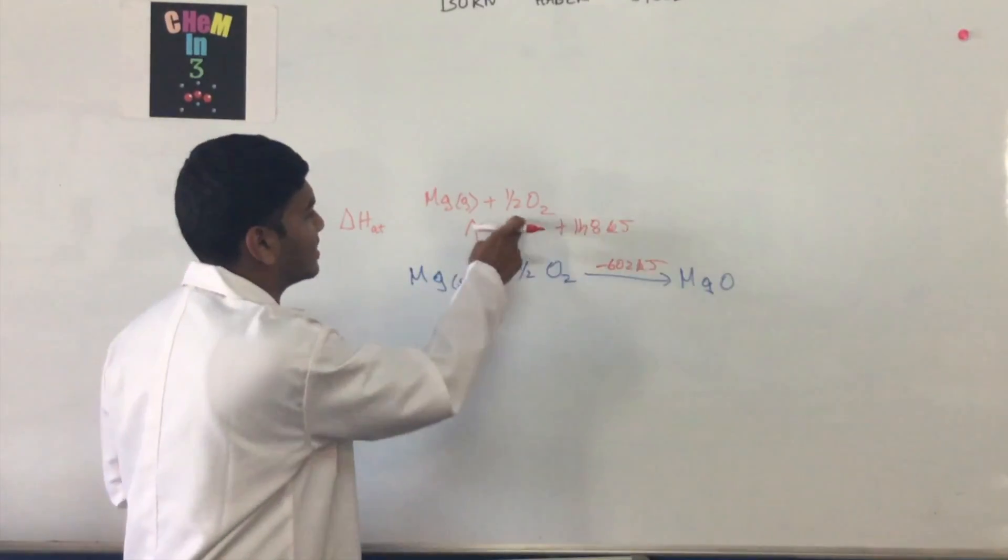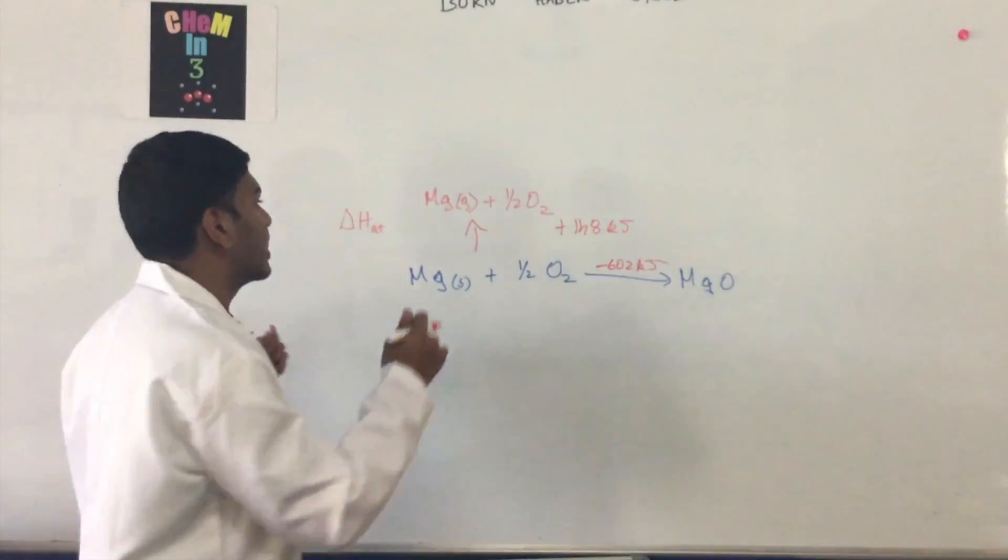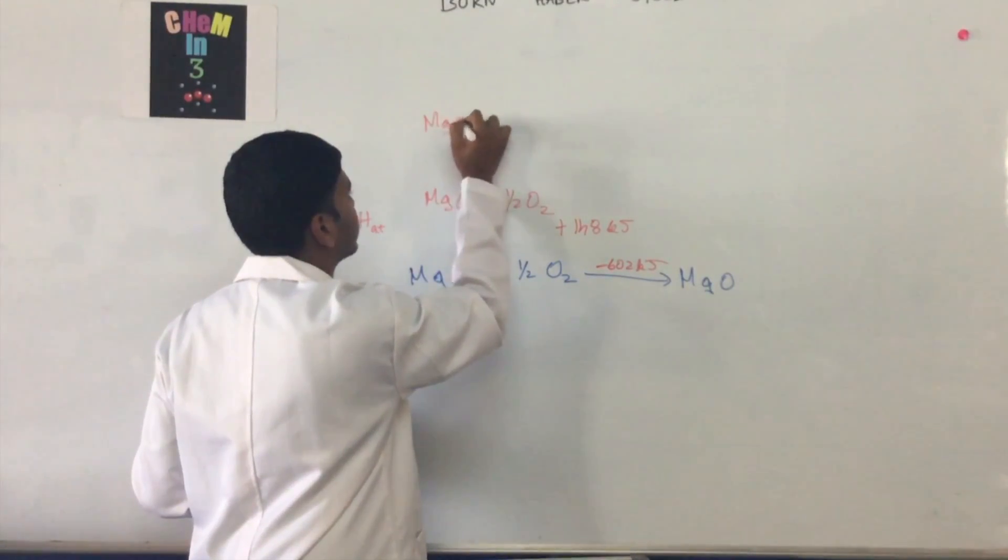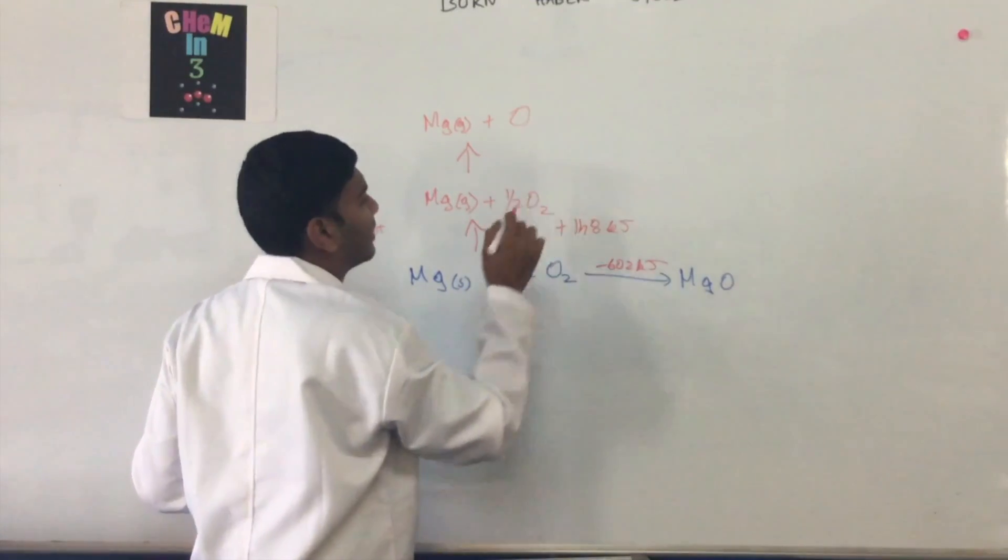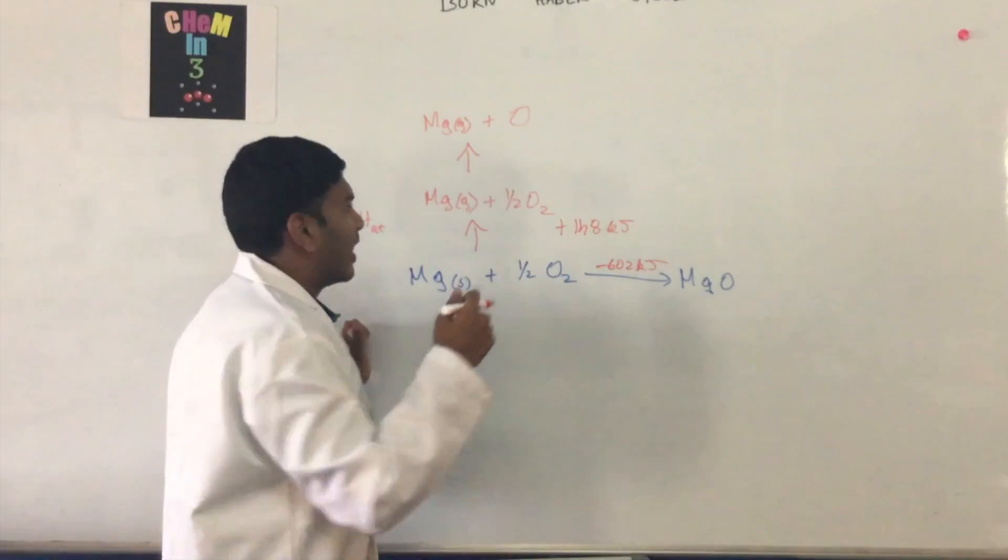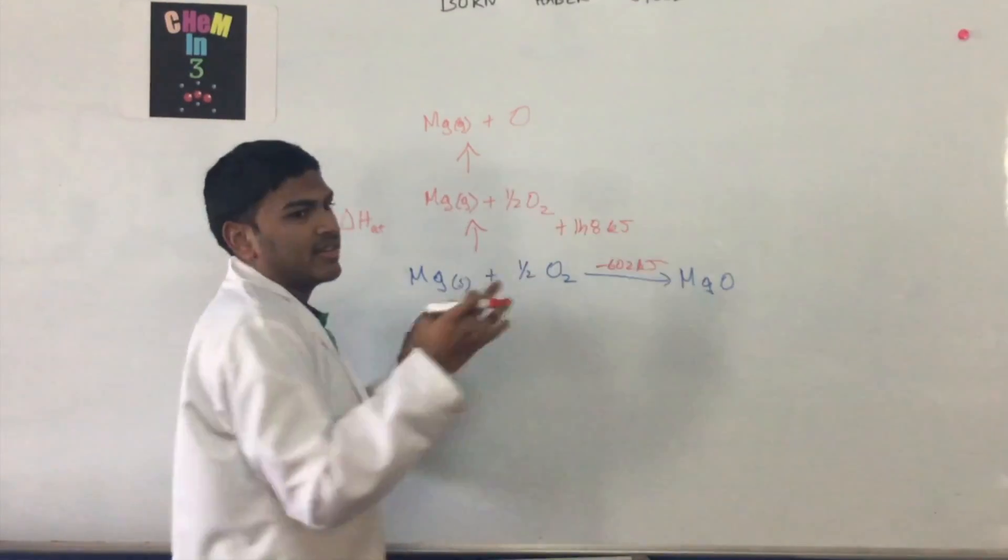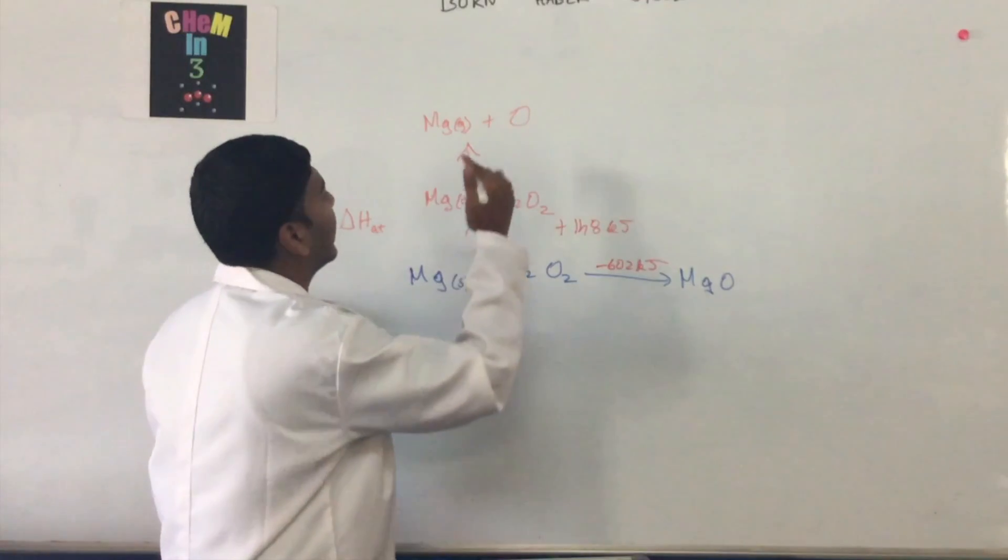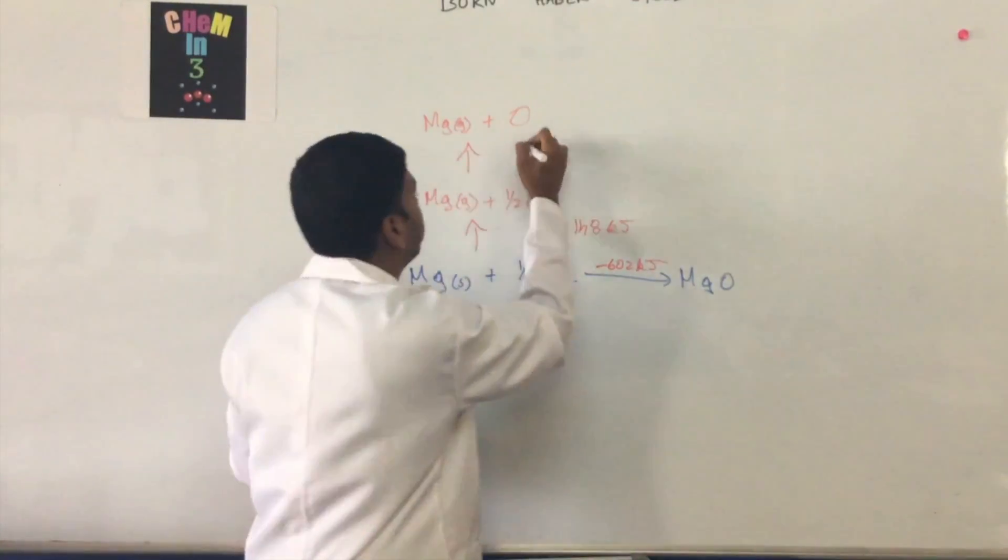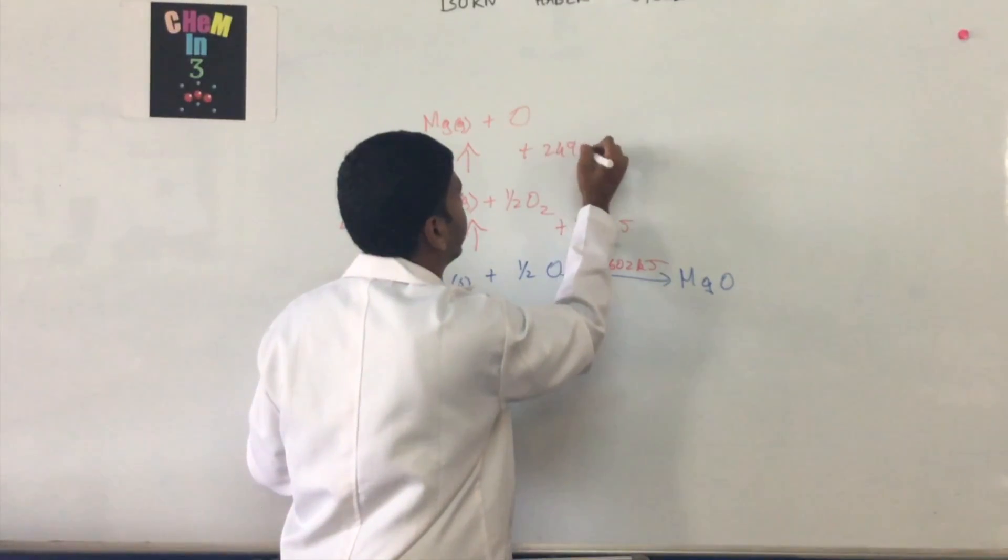And oxygen is the same, but we do the same process for oxygen where we go as Mg in its gaseous state plus O in its gaseous state when it's separated from its oxygen molecule. And this is at plus 249 kilojoules.